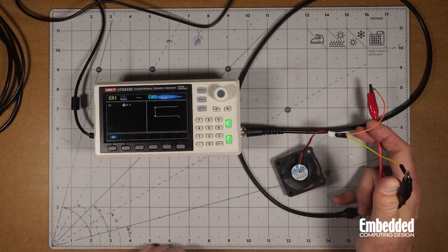This has been my review of the UTG-932E portable function generator. My written review is available on EmbeddedComputing.com, and I think it's an excellent tool for around $150. We're giving one away - information on the contest is available in the video description. Thanks for watching! For more content from Embedded Computing Design, visit us on social at the links provided below.